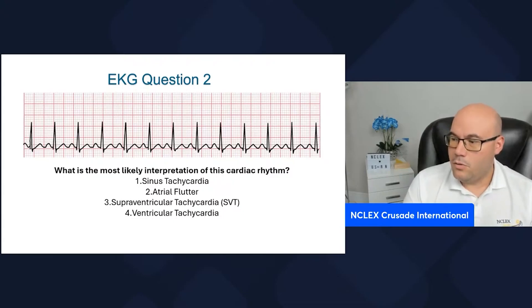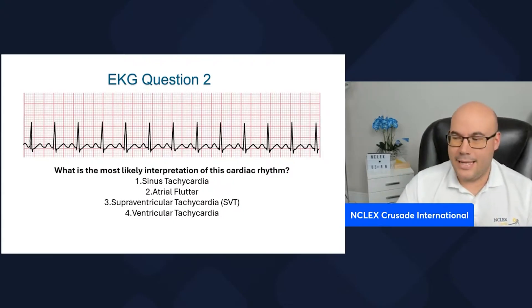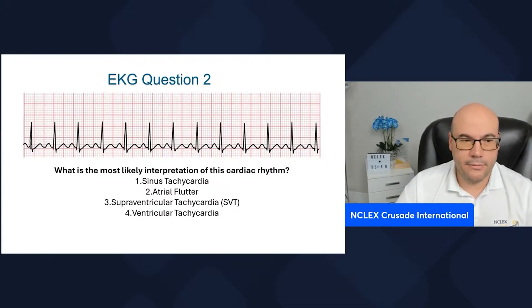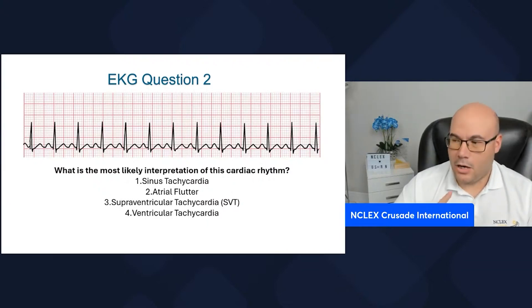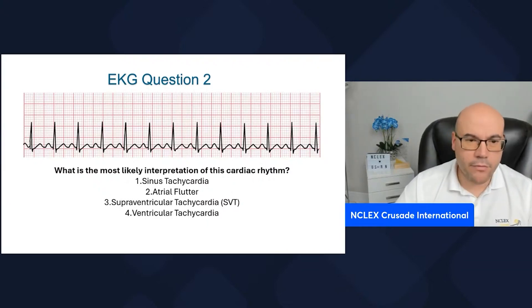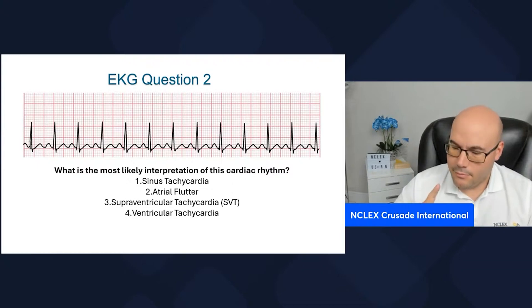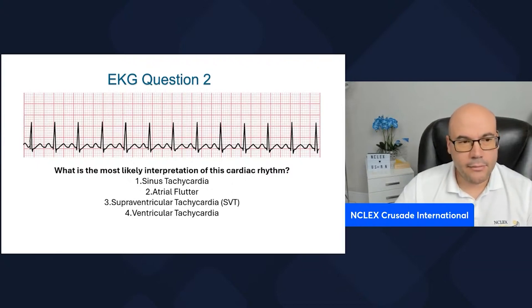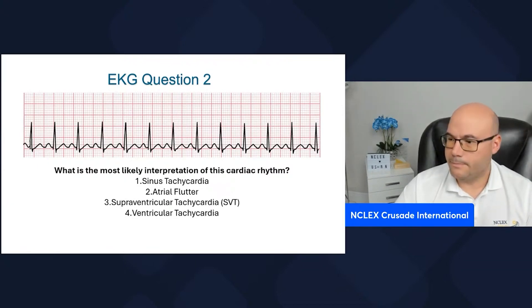Now, you have to analyze the same five steps: rhythm, heart rate, PR interval, QRS, and identify if there's a P for every QRS.